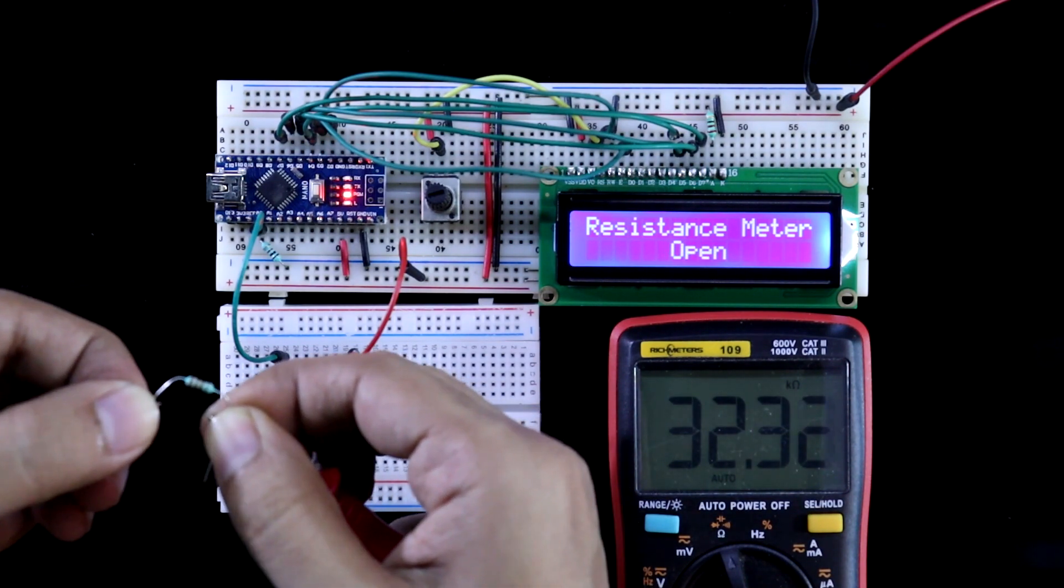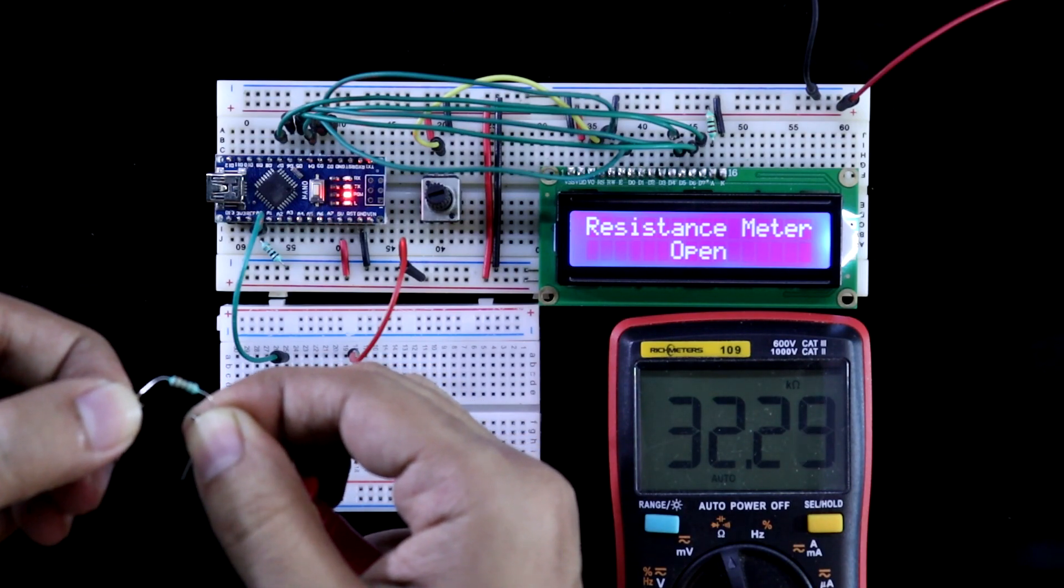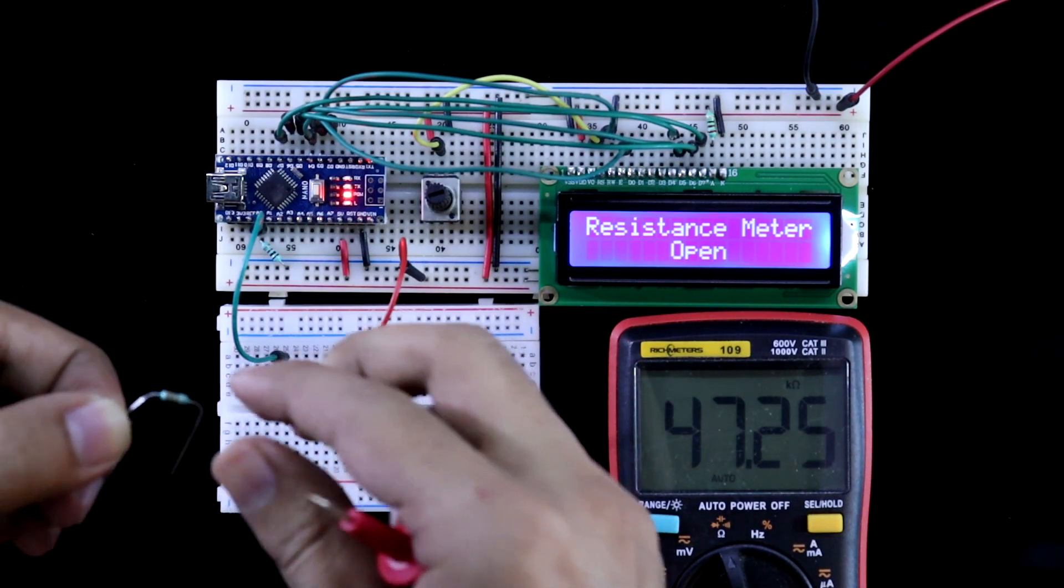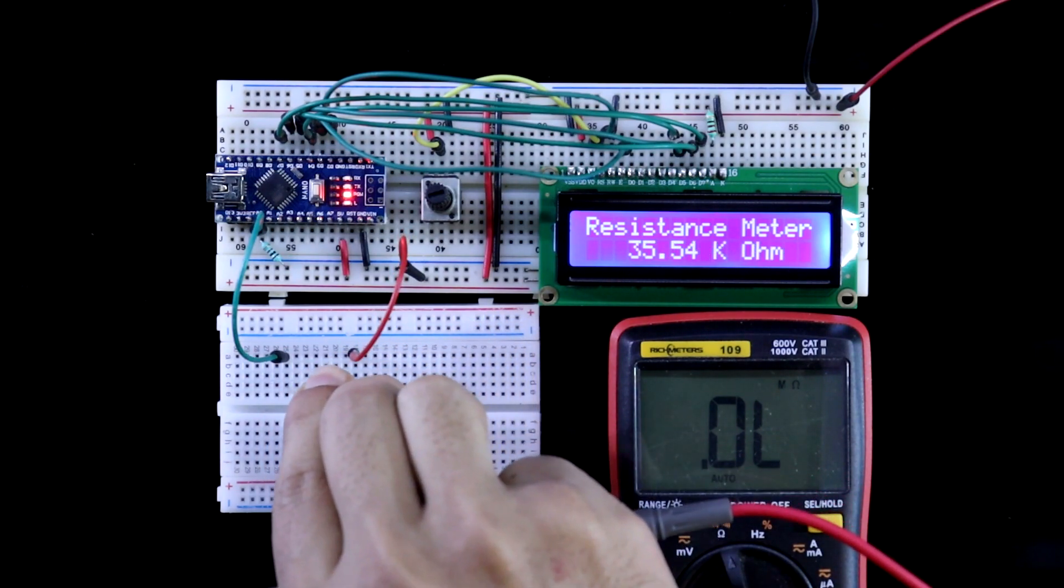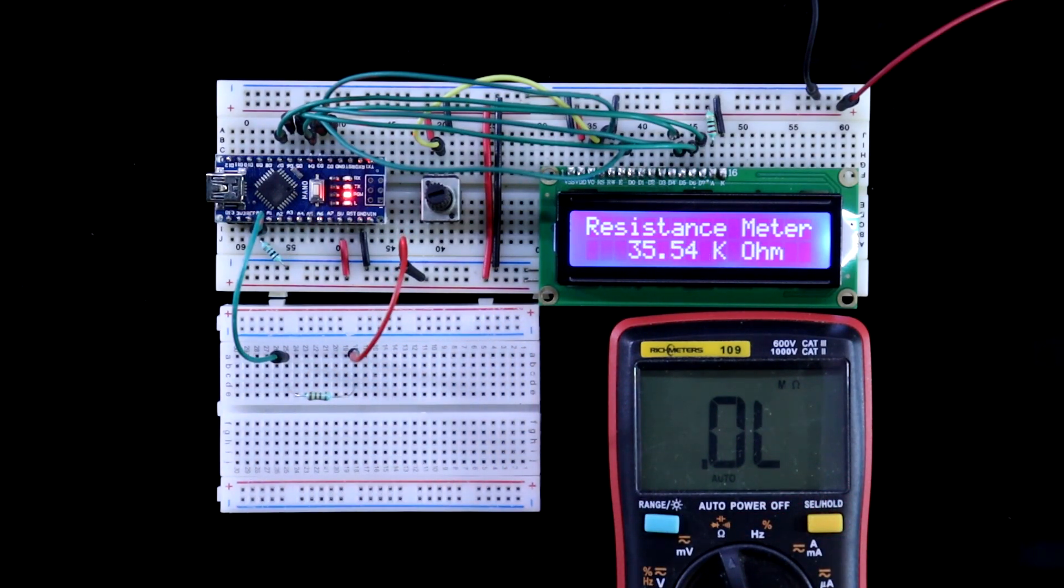33 kilo ohms, and it is 32.29. And in the multimeter, it is 35.54. By measuring the higher value resistance, the accuracy is decreasing.